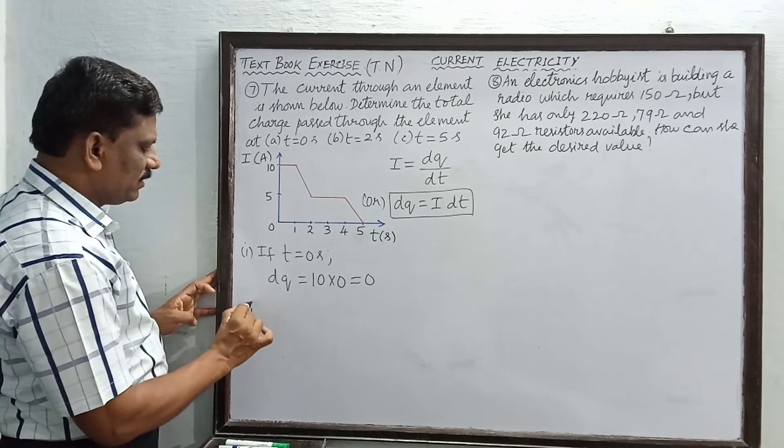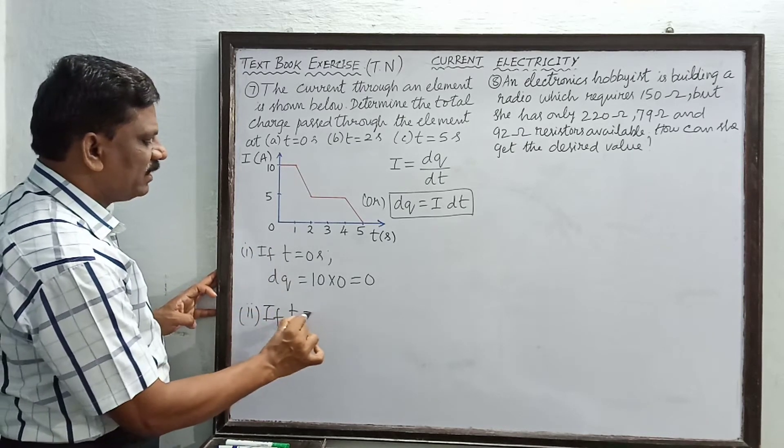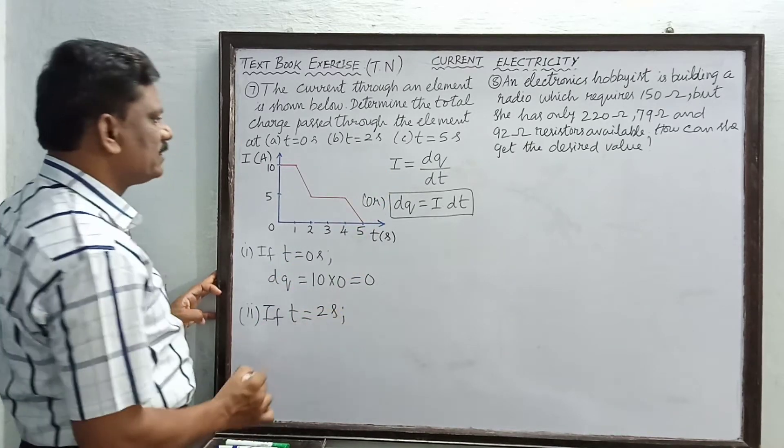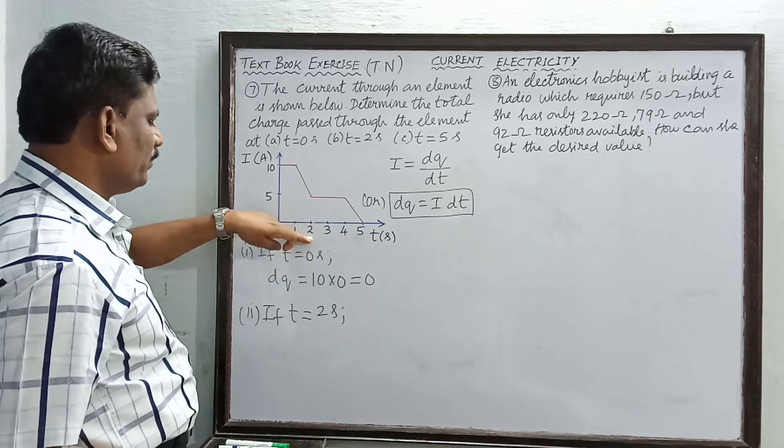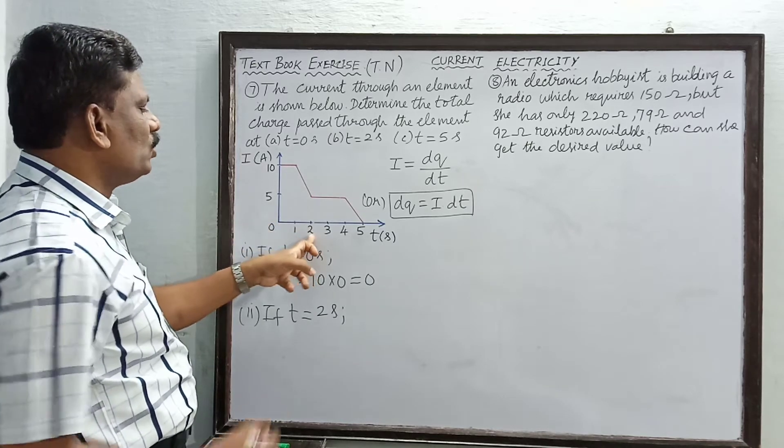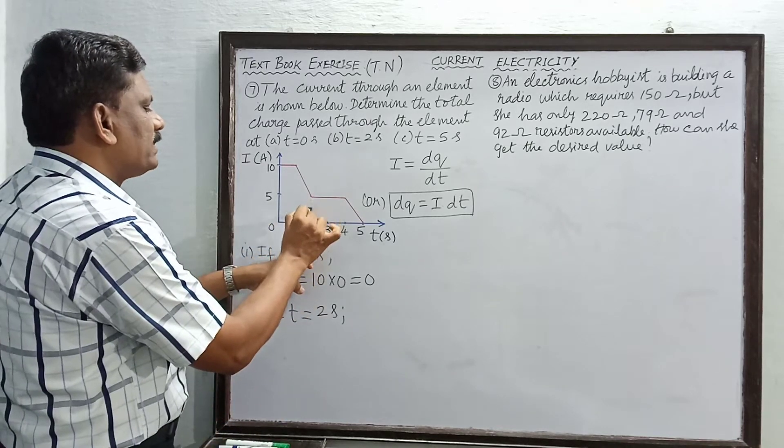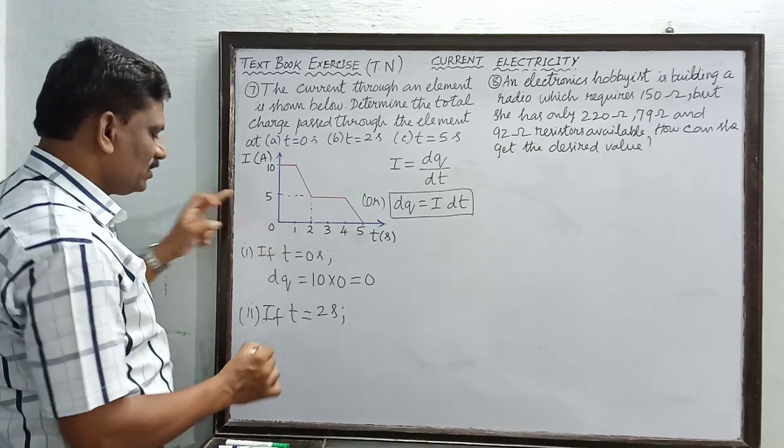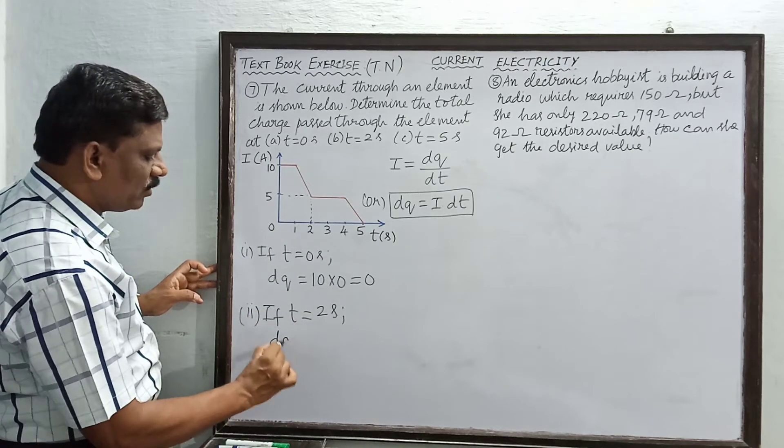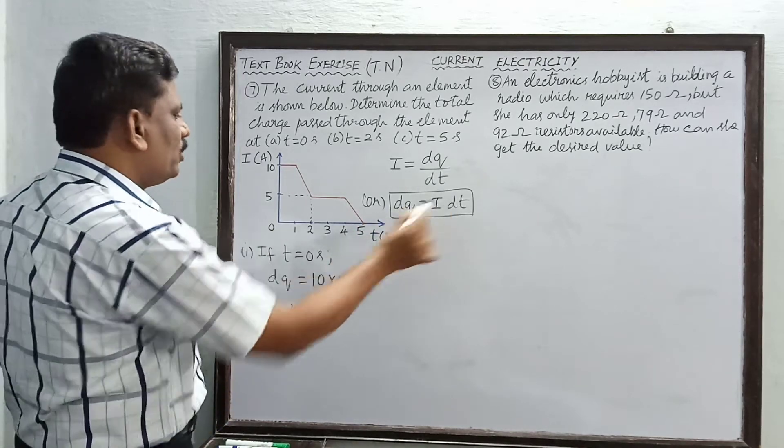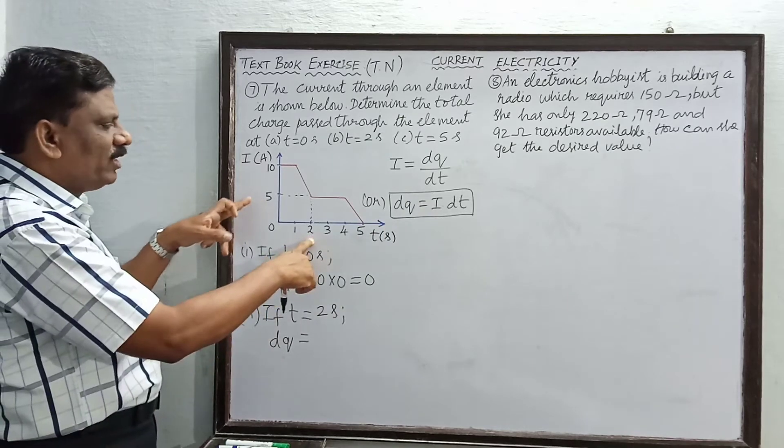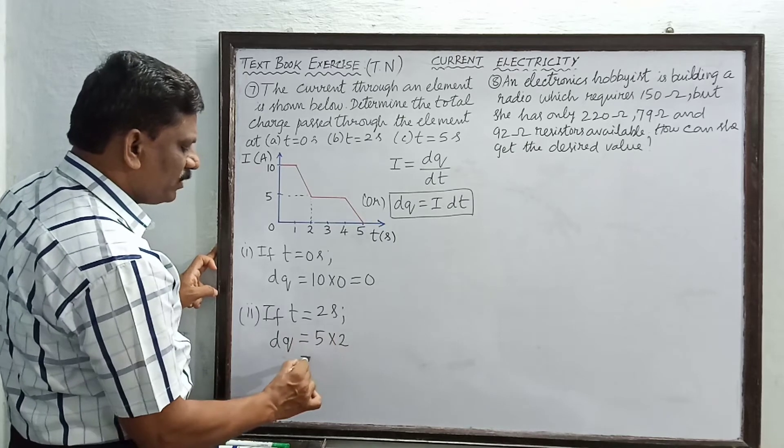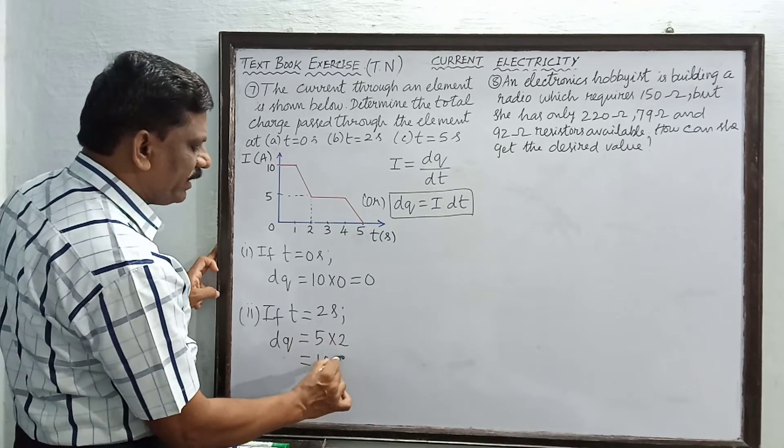Second case, if t is equal to 2 seconds. You can look at this picture now. At time t equal to 2 seconds, you see that the current flowing through the element is 5 amperes. So dq is now equal to i into dt. At time t equal to 2, i equals 5. Therefore this is 5 into time 2. So 5 into 2 equals 10 Coulombs.